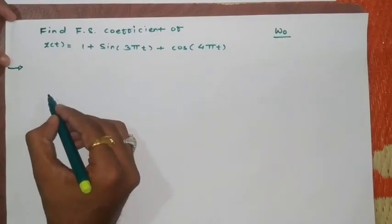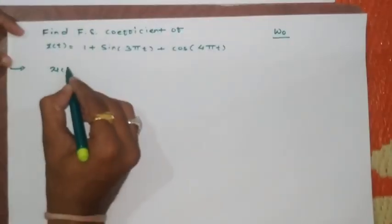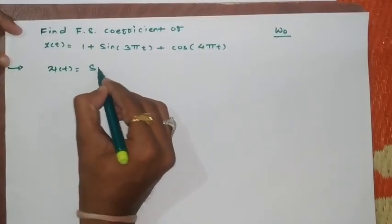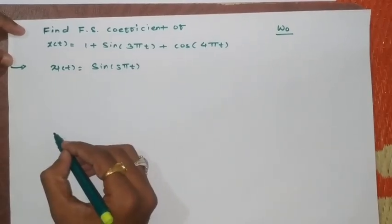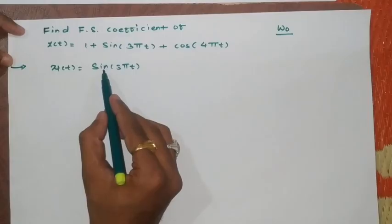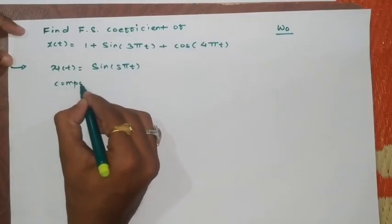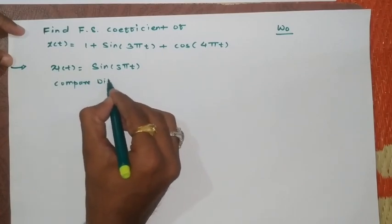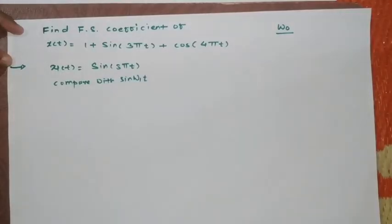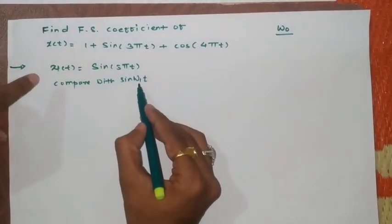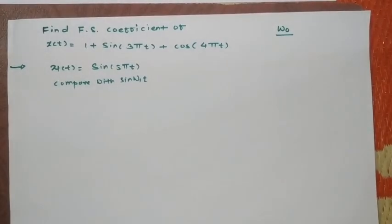let us treat this as the first function which is x1(t) as sine 3π t. Now if I compare this particular function with standard form as I can write compare with sine ω1 t. Now here I am considering ω1 because the function we are treating as x1. Hence I am putting it at ω1.